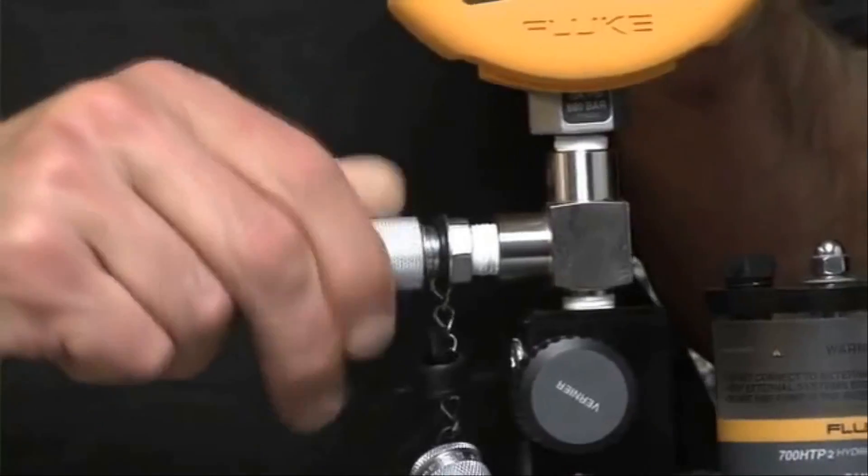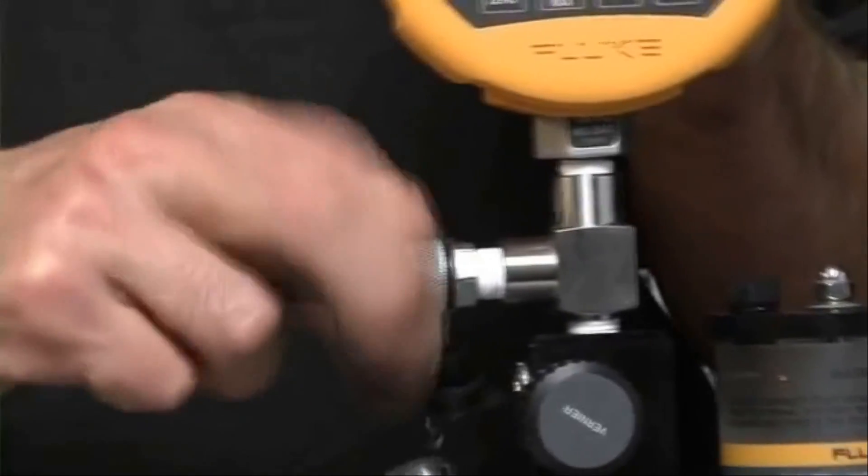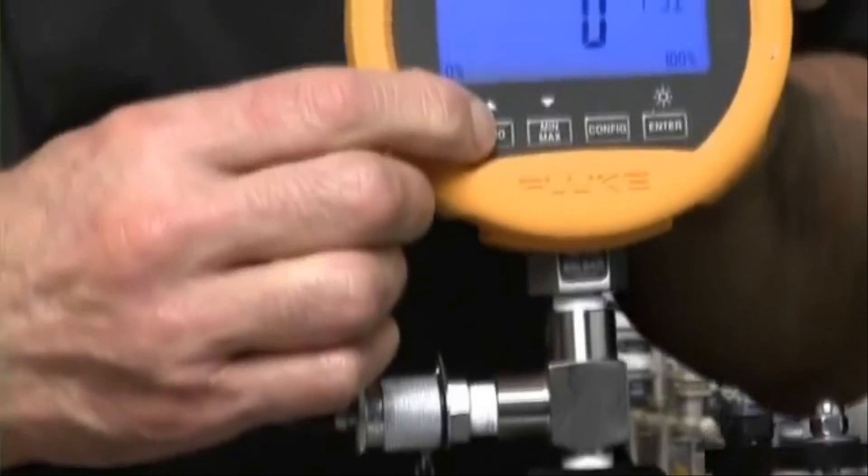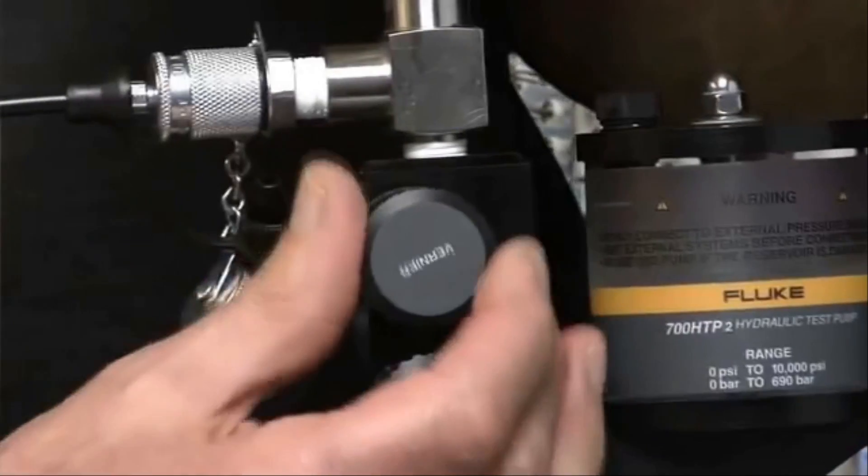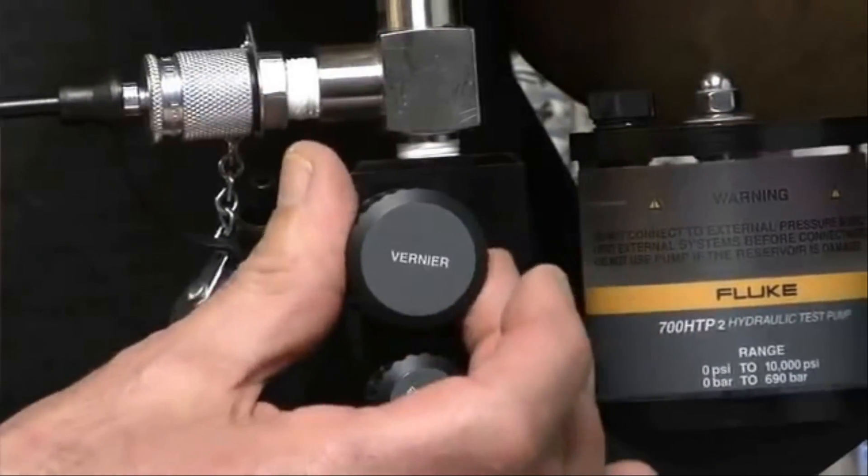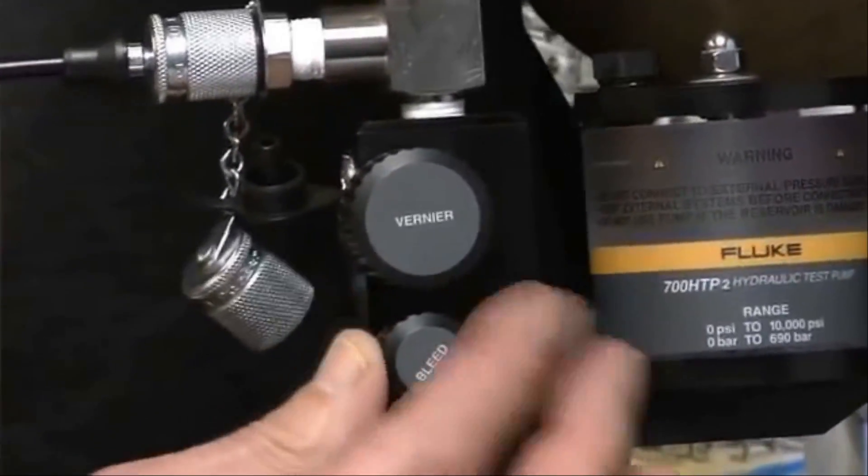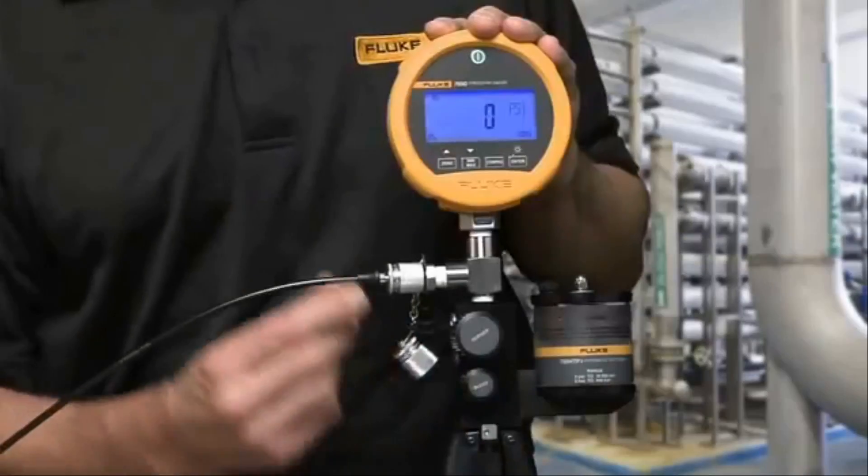To operate the pump, make all connections and zero the gauge. Set the pump vernier adjuster to the middle of its range, then close the vent valve and connect the test hose from the pump to the unit under test.